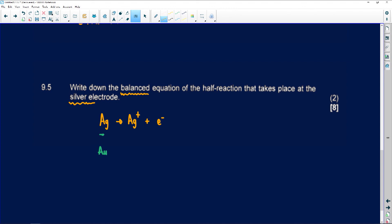So this is the direction in which it will look. Make sure that the electron is on the correct side, and then that would have been for two marks.